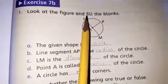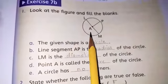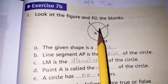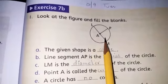Write down date and day. Question 1: Look at the figure and fill in the blanks. Students, this is a circle. This point is center of the circle. This is radius and this is diameter.